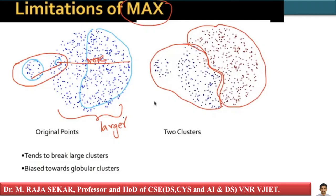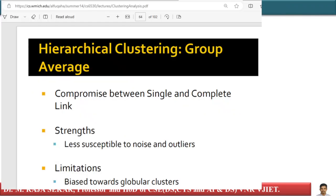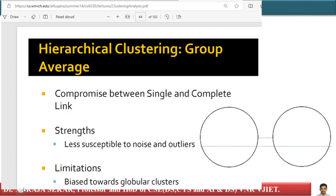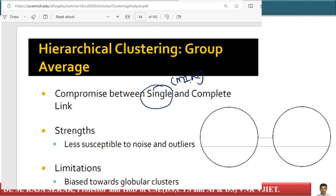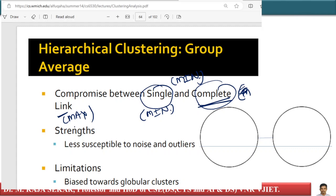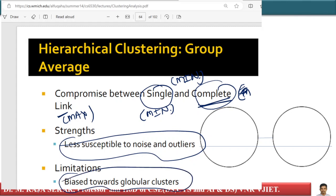Group average is a compromise between single link and complete link. Single link means the min approach, and complete link means the max approach. Therefore group average is a compromise between min and max approaches. It is less susceptible to noise and outliers, but its limitation is that it is biased towards globular clusters.